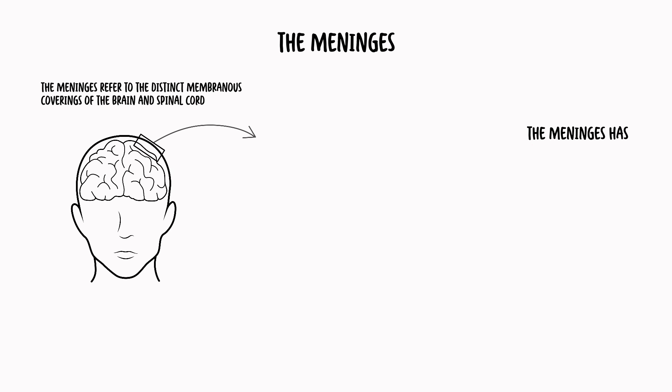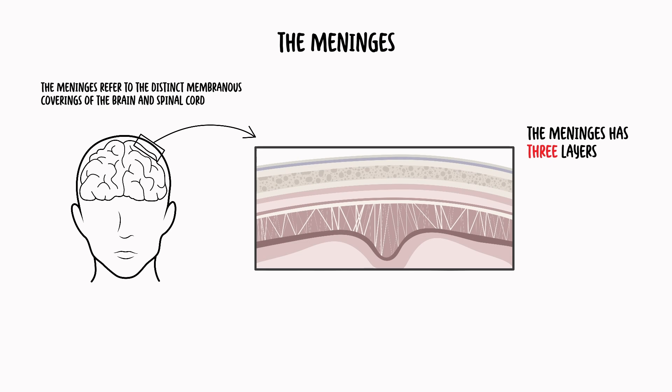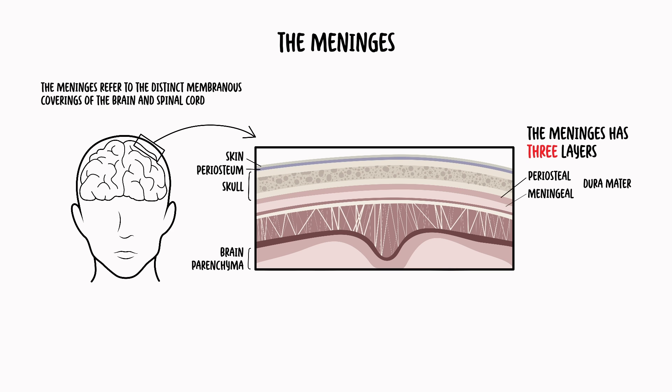The meninges have three layers. The most superficial layer, which is directly underneath the skull, is called the dura mater. The dura mater is tough, fibrous, and inextensible. The dura mater is made up of two layers: the periosteal and meningeal layers.